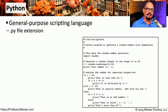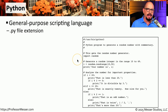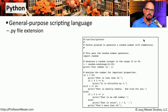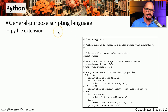Cloud-based services have changed the way that we think about automation, because cloud-based services are not about a specific operating system or a specific work environment. Instead, we'd like scripting and automation done in the cloud that can be applied towards any operating system. That was part of the reason behind the success of Python. Python is a general-purpose scripting language that works across many different operating systems and provides flexibility whether you're in Windows, Mac OS, or Linux. You'll often see Python scripts labeled with a .py file extension.